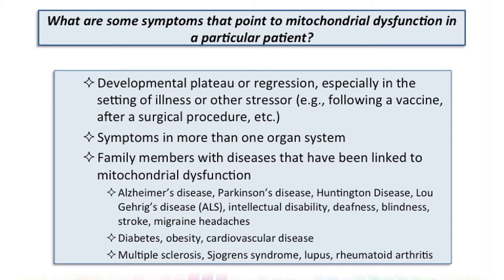Such stressors could be, for example, following a surgical procedure with anesthesia or following a vaccine. Other classic signs include symptoms in more than one organ system, and family members with diseases that have been linked to mitochondrial dysfunction — for example, Alzheimer's, Parkinson's, Huntington's disease, Lou Gehrig's disease, learning disabilities, problems with hearing or vision, stroke or migraine headaches, and rheumatoid conditions like Sjogren's syndrome, lupus, or rheumatoid arthritis.